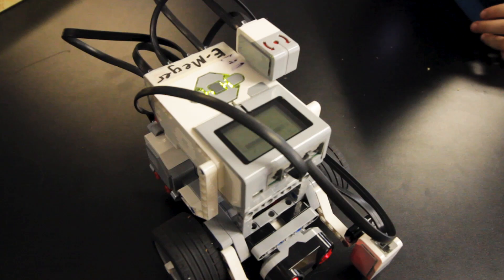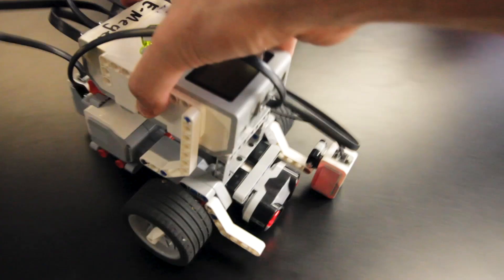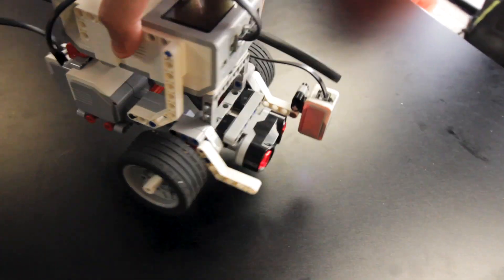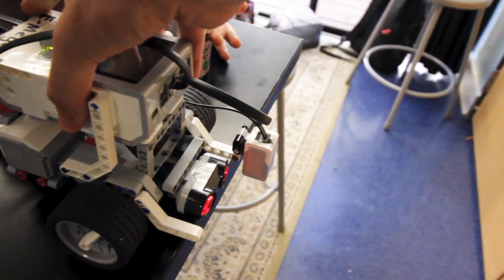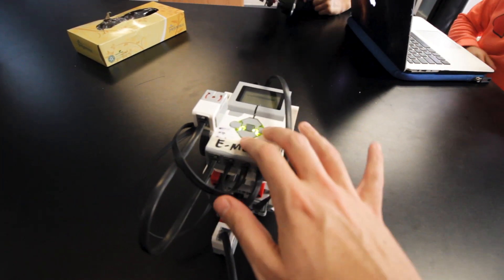So typically students will build something like this where they have a color sensor up front and an ultrasonic sensor that says if it gets too close it'll back up and then if it sees no color it'll also back up. That's kind of a traditional build that most people will do. But some students are doing a little bit more exotic builds and trying to do something different than the traditional course of action as far as programming it.